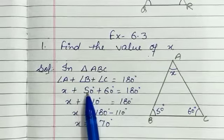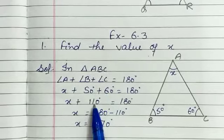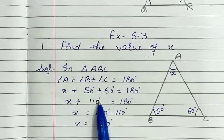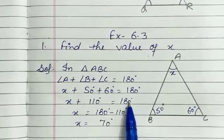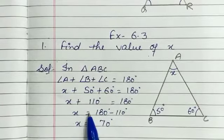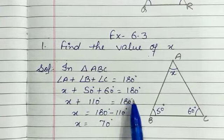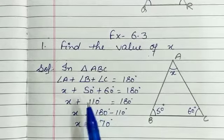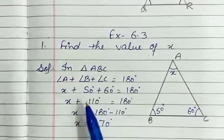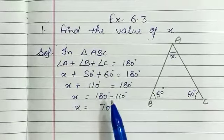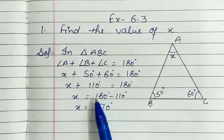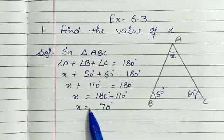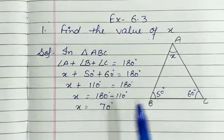50 plus 60 is equal to 110. So X plus 110 is equal to 180, which means X is equal to 180 minus 110. Therefore X is equal to 70 degrees.